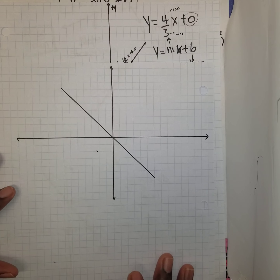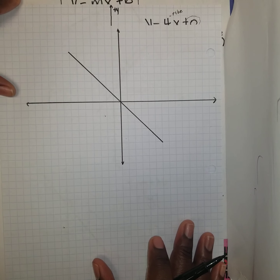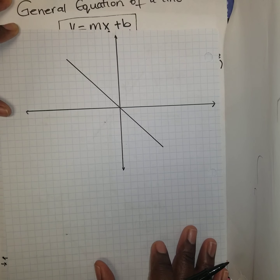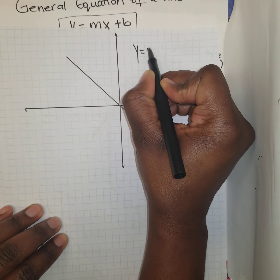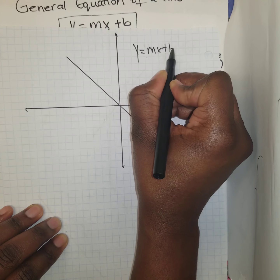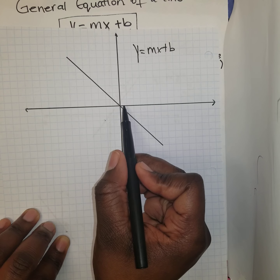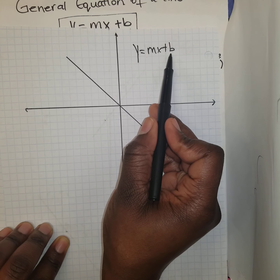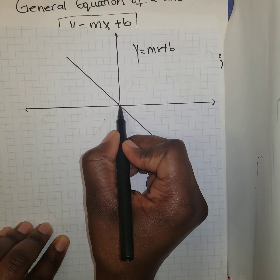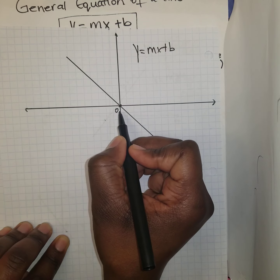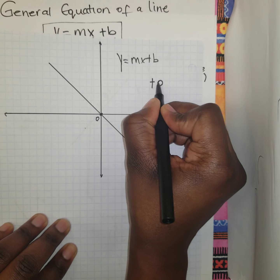Let's go for another one. We are given a line and asked to find the equation in the form y equals mx plus b. We see that our b value, or the y-intercept, is at the origin. Once it's at the origin, we know x equals 0 and y equals 0, so b is going to be 0.